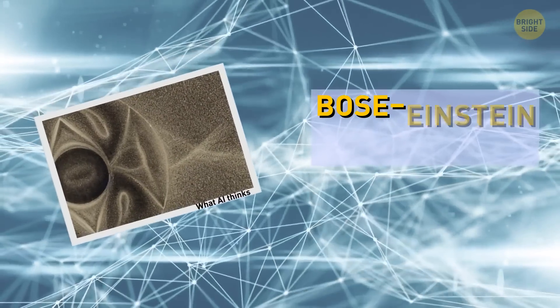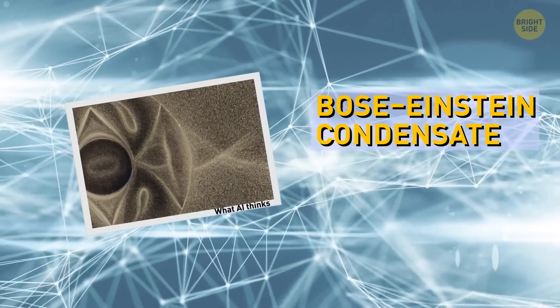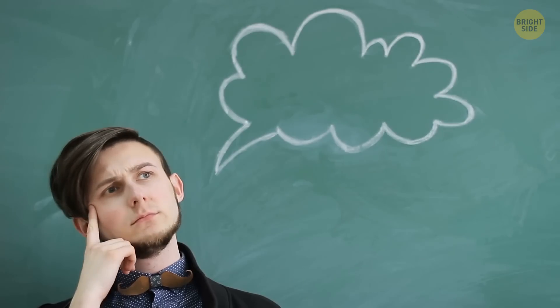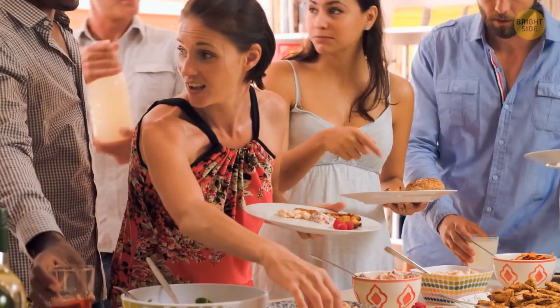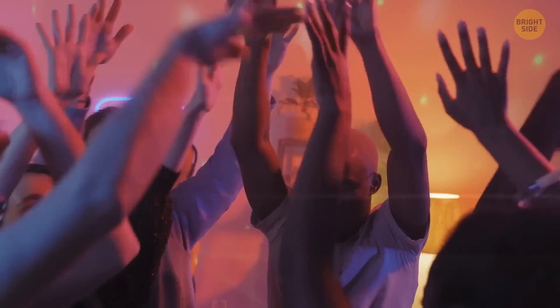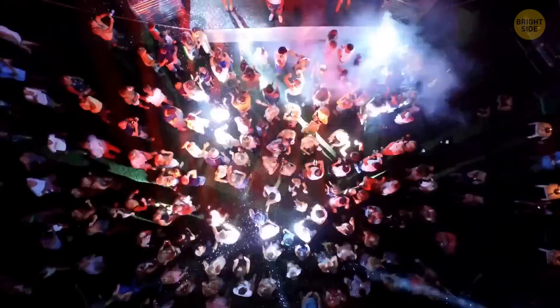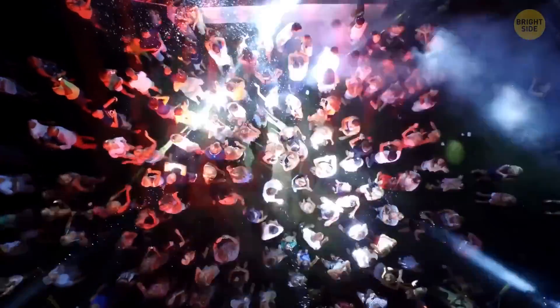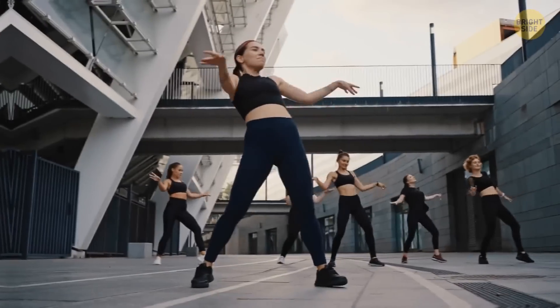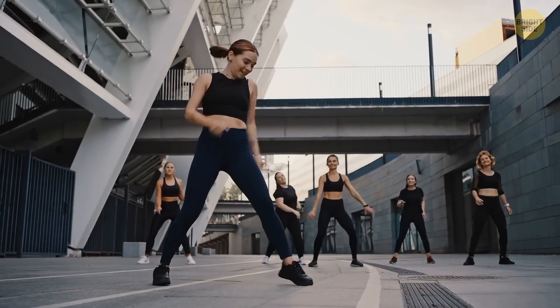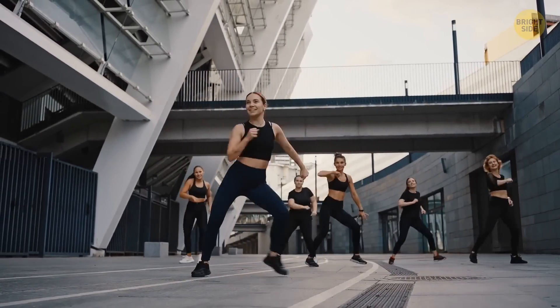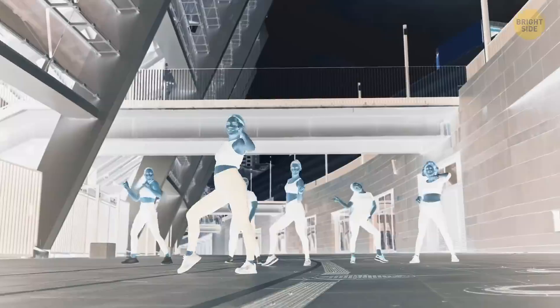Next, we have a Bose-Einstein condensate. It's a pretty weird state of matter. Let's try to explain it like this. Imagine you have a group of friends at a party. Usually everyone dances and moves around freely, creating a lively and energetic atmosphere. But what if something strange happens? What if all your friends suddenly slow down and start moving together in perfect sync, almost like a slow-motion dance? Sounds like something out of a horror movie. But that's what happens in a Bose-Einstein condensate.